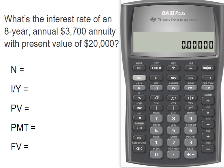What's the interest rate for the annuity? We can back into this. We know that N equals 8 because it's an annual annuity for 8 years. IY is what we don't know - that's what we're going to solve for.